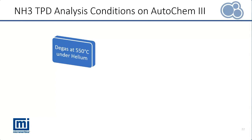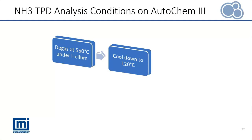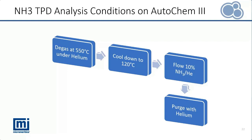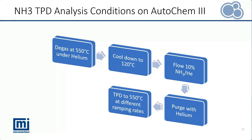All TPDs were performed on the Micromeritics AutoChem 3 with the same analysis conditions. First, the sample was degassed at 550 degrees Celsius under helium flow and the temperature was cooled down to 120 degrees Celsius. Ammonia was introduced at 120 degrees Celsius to prevent any physisorbed ammonia. After saturating the surface, the excess adsorbate was purged with helium for an hour. Lastly, TPD was performed under helium flow to 550 degrees Celsius at different ramping rates: 3, 10, 15, and 25 degrees Celsius per minute.